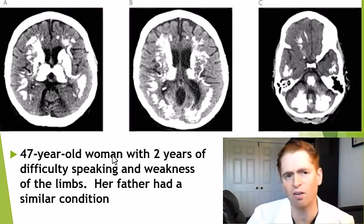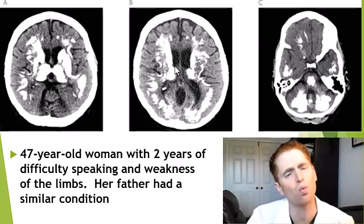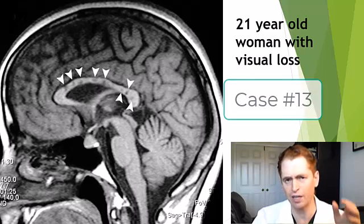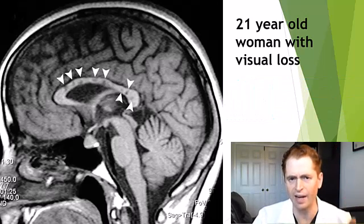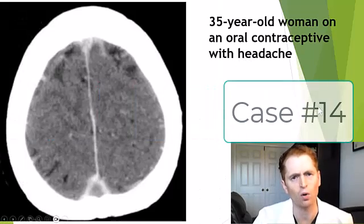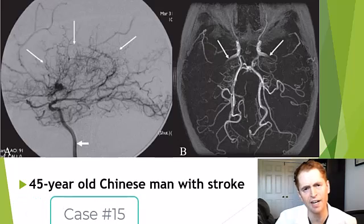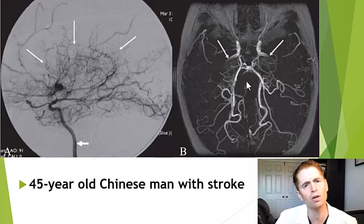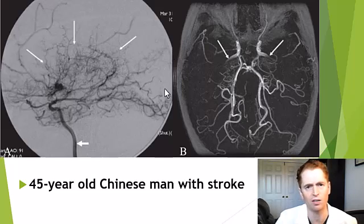It doesn't take eagle eyes to see the abnormalities, but what is the diagnosis? A 21-year-old woman with vision loss — this is a sagittal T1 MRI with no contrast dye given. A 35-year-old woman on oral contraceptives with headache. A 45-year-old Chinese man with stroke: on the left, a catheter angiogram; on the right, an MR angiogram with reconstructions. Bonus points if you can name the two different findings shown by the arrows in these images.